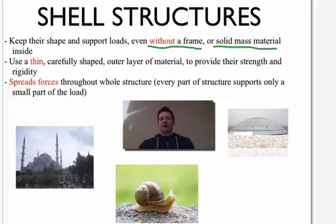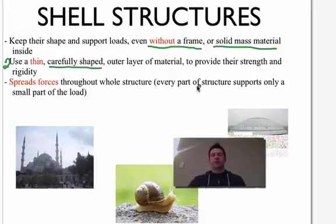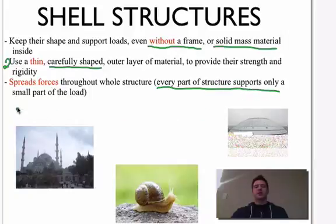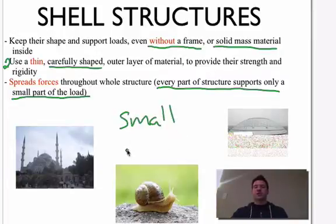What they use is a thin, carefully shaped outer layer of material, and that's what provides the strength. That word carefully shaped is going to be important as we move through this, because we're going to talk about some of the problems with shell structures. What happens is the forces are spread throughout the whole structure. Every part of the structure is going to support a small part of the load.